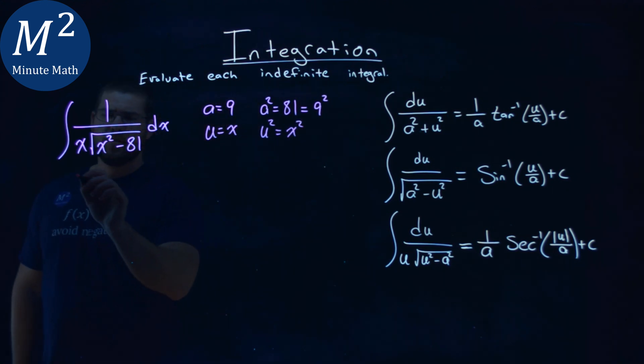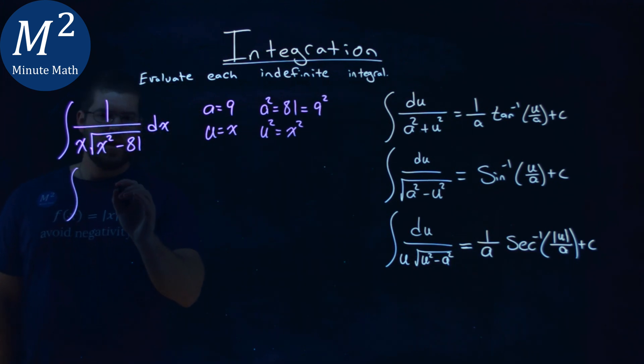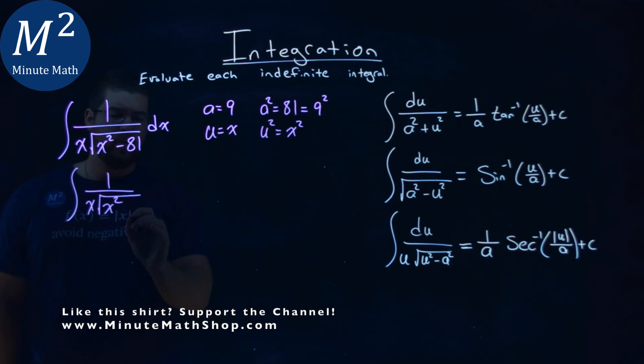So now let's go rewrite this integral to line up and look just like our definition. We have 1 over our x value being u, so it's just x, pretty easy, square root of x squared. But instead of the 81, I'm going to subtract 9 squared, dx.